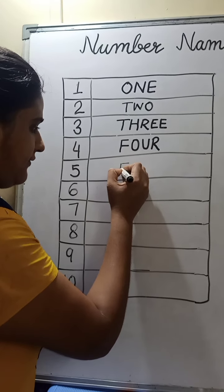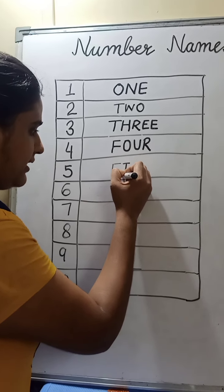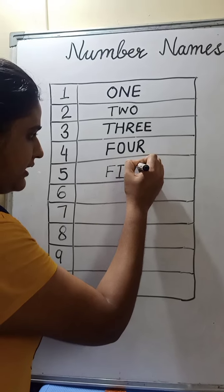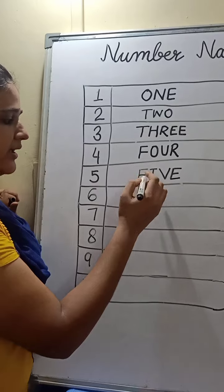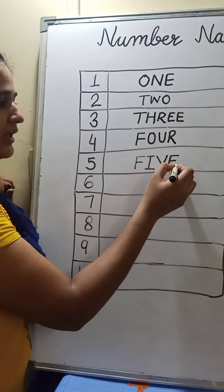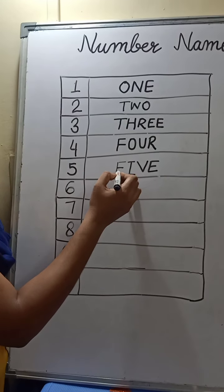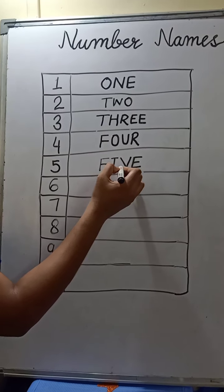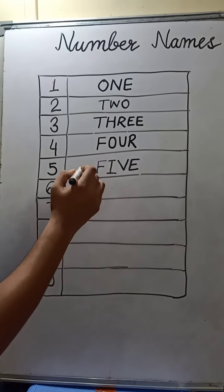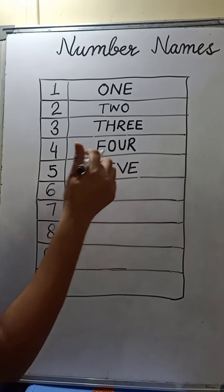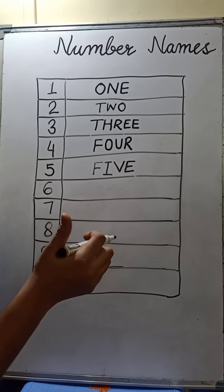F-I-V-E. Again F-I-V-E. It is called 5. F-I-V-E. I hope you remember this.